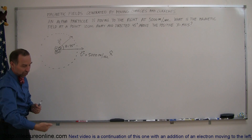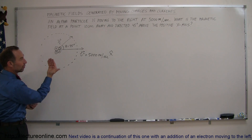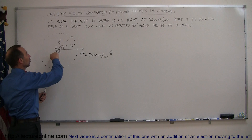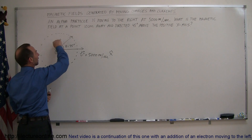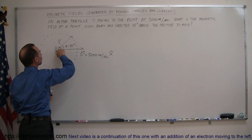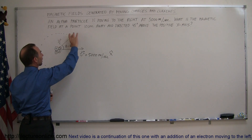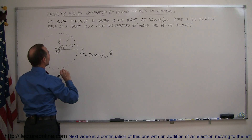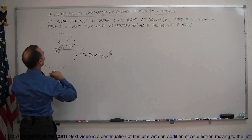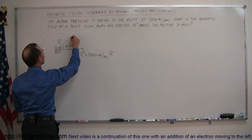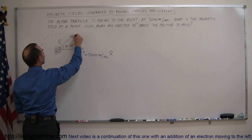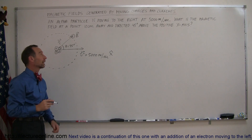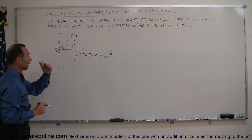Below it's directed downward, behind it's into the board, and on the back side of the moving charge it's upward. So at 45 degrees above the horizontal axis, we can say that the B-field is out of the board — we draw a little dot with a circle around it, indicating that's the tip of the arrow of the magnetic field coming out of the board.